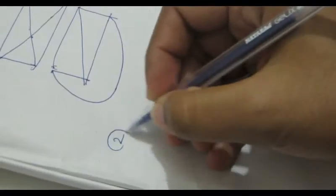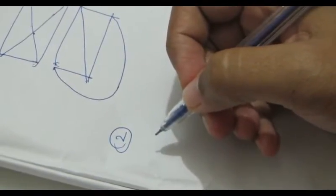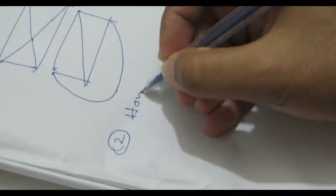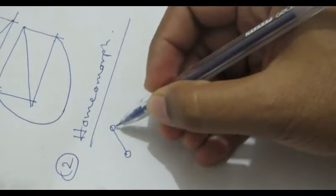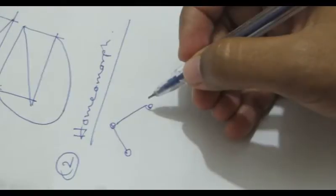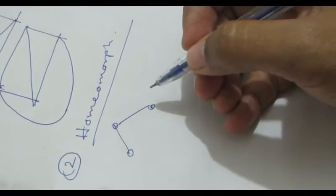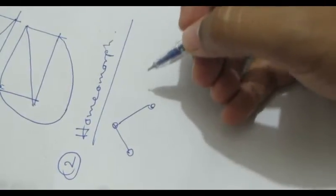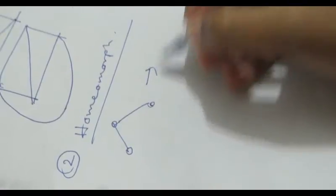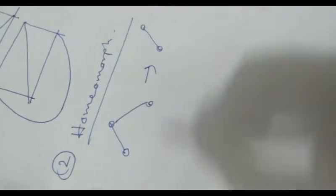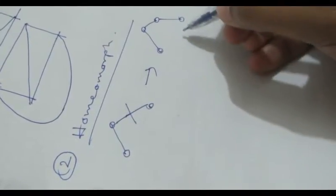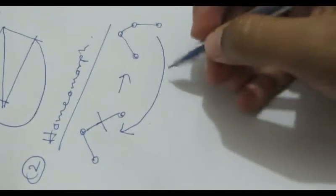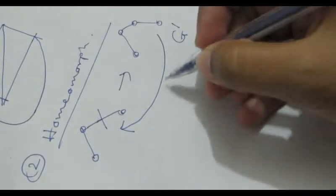Our second topic is homeomorph. What is a homeomorph? A graph obtained from a graph by a sequence of edge subdivision. Think we subdivide this edge and break it here and create a new vertex — this is now a homeomorph of the original. So G-dash is a homeomorph of G.